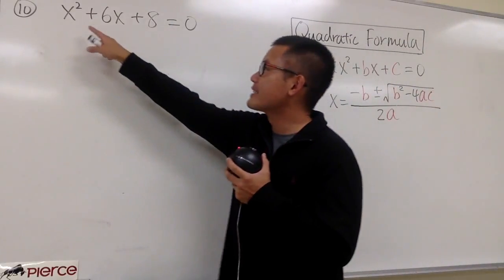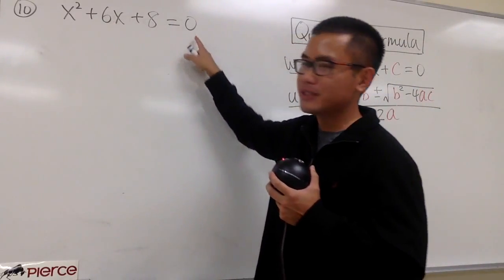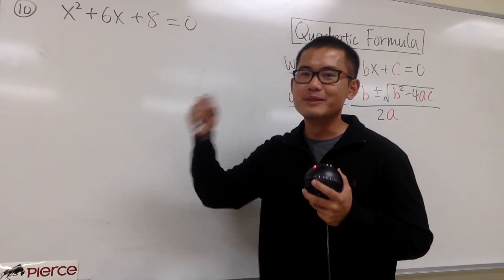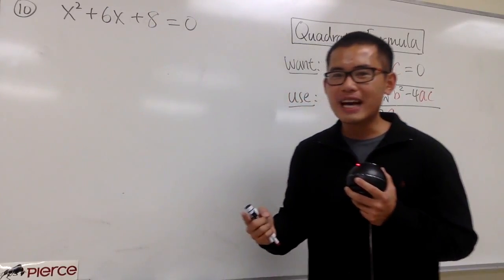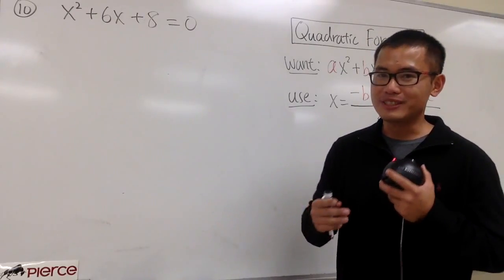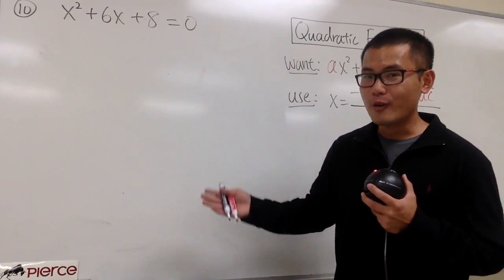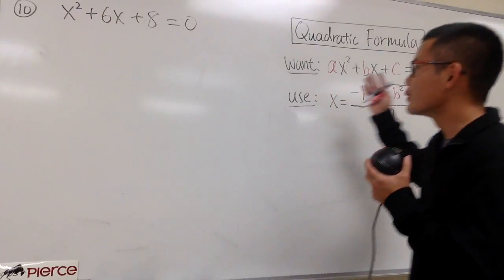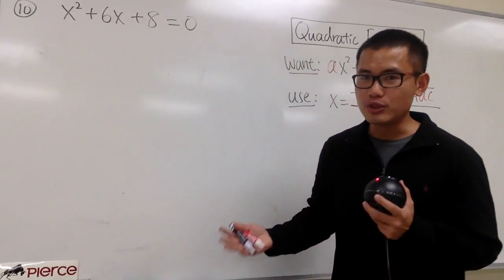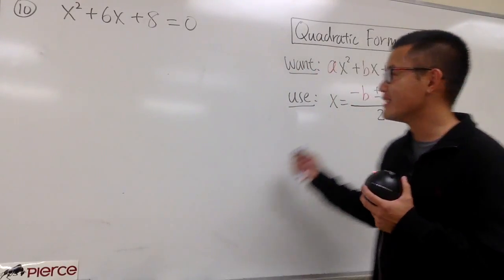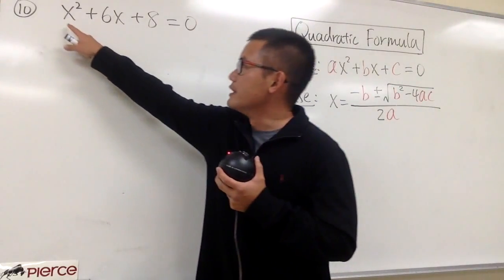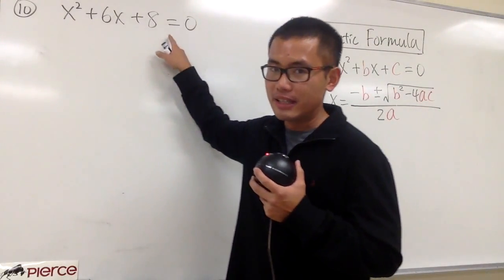This is x squared plus 6x plus 8 is equal to zero, and we have done this twice already — the first time was with factoring, and the second time was with completing the square. Of course, we can also use the quadratic formula to do this. So just for demonstration purpose, let me do this for you guys. You see this right here — it's in standard form already, so that's wonderful.